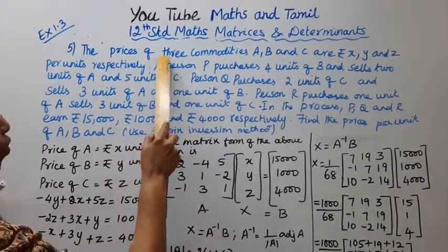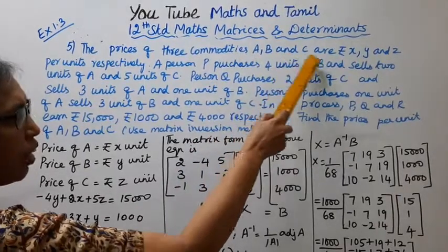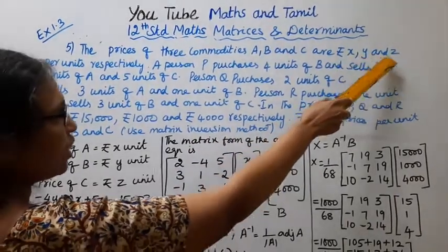The prices of three commodities A, B, C are rupees X, Y and Z.